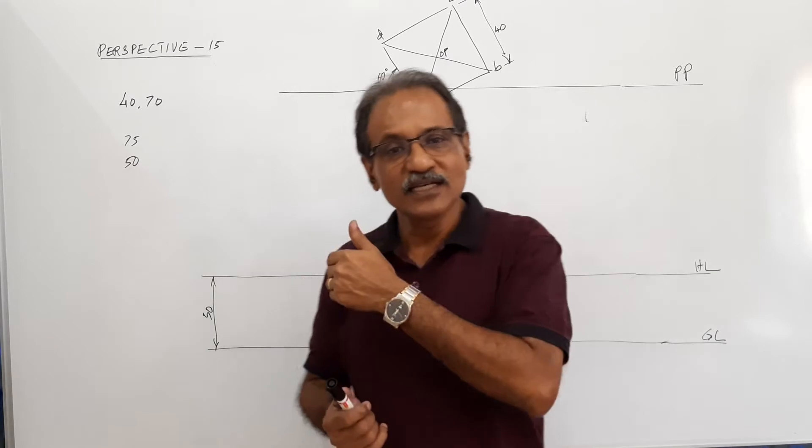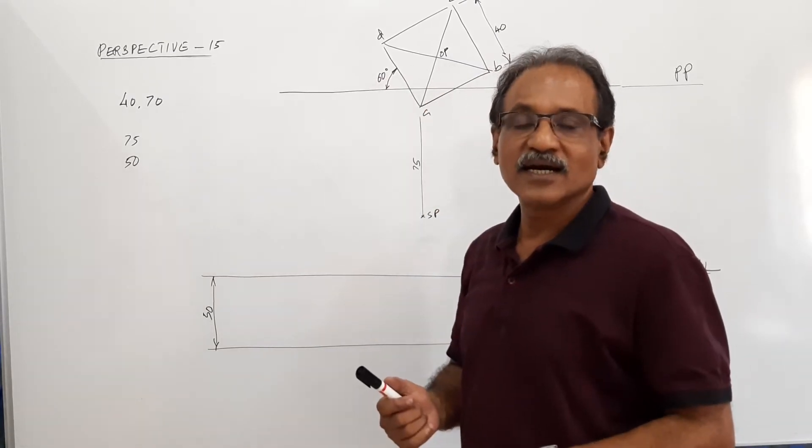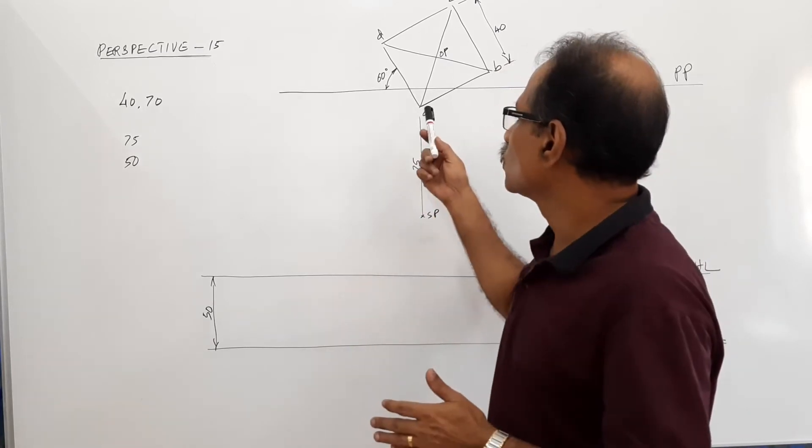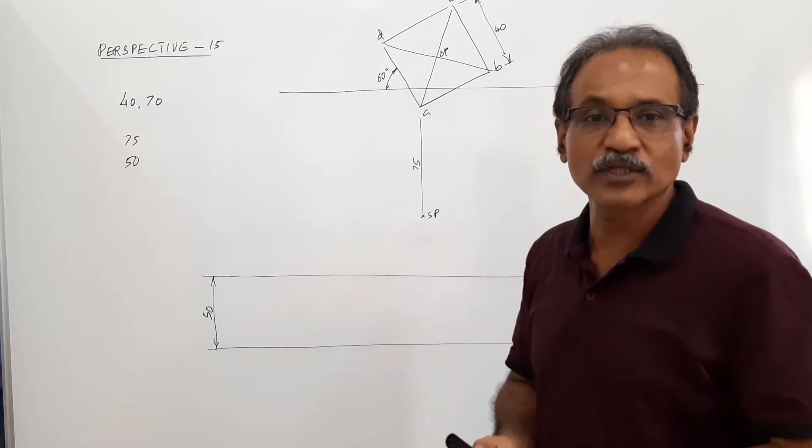The station point is 75 mm in front of BP. And the center plane passes through the corner A. And the height of the observer, station point is 50 mm above the ground.